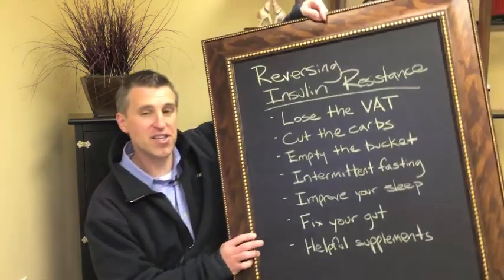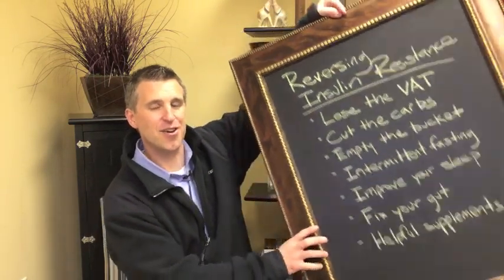The next one is fix your gut. The gut is the seed of health, and everything seems to come from the gut. The microbiome — the balance of bacteria in your gut — is associated with inflammation, and the wrong bacteria have been shown to lead to insulin resistance. Cleaning up the gut and feeding the right fiber has been shown to reduce blood sugar and improve insulin sensitivity. So make sure your gut is healthy; fix the gut if you need to.